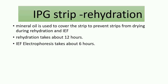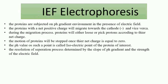IPG strip rehydration takes about 12 hours. We should prevent the strips from drying, so we use mineral oil to cover them. Then electrophoresis is run, which takes about 6 hours. The proteins are subjected to the pH gradient environment in the presence of an electric field. Proteins take different charges depending on their surrounding pH: near the acidic pole they become positively charged, and near the basic pole they become negatively charged. When the electric field is applied, proteins start to move and either lose or pick up protons according to their net charge.